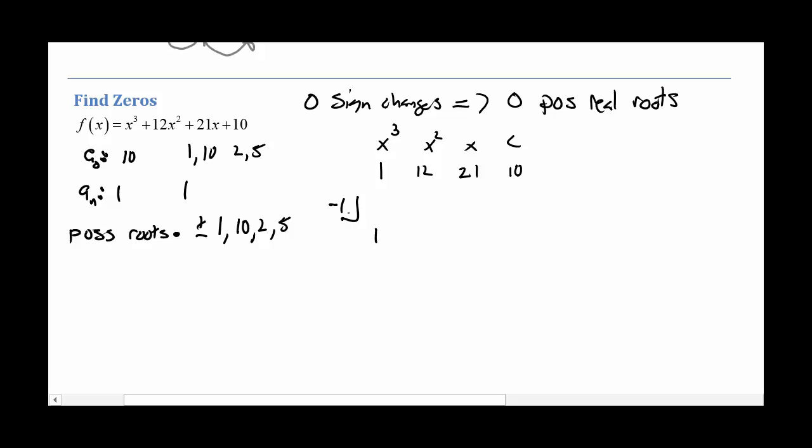So drop the 1, multiply, combine like terms, multiply, combine like terms, multiply, and we get a 0. Yay! That wasn't that hard at all.